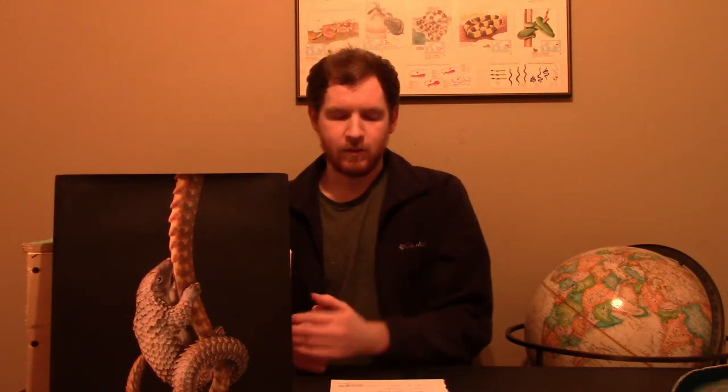The second is the pangolin, seen here. There are eight species of pangolin. They're in their own order, Folidota. They're so distantly related to other mammals.